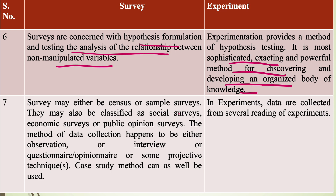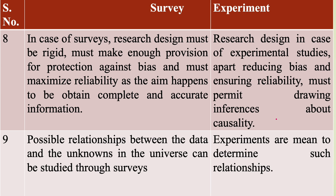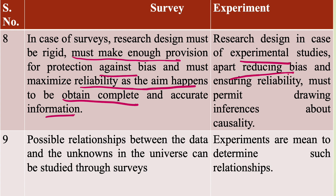Surveys may either be census or sample surveys, and may be classified as social surveys, economic surveys, or public opinion surveys. The method of data collection may be observation, interview, questionnaire, or some projective techniques; case study method can also be used. Whereas in experiments, data are collected from several readings of experiments performed in the lab. In the case of surveys, the research design must be rigid, must make enough provision for protection against bias, and must maximize reliability to obtain complete and accurate information. Whereas in experimental research, apart from reducing bias and ensuring reliability, the design must permit drawing inferences about causality.